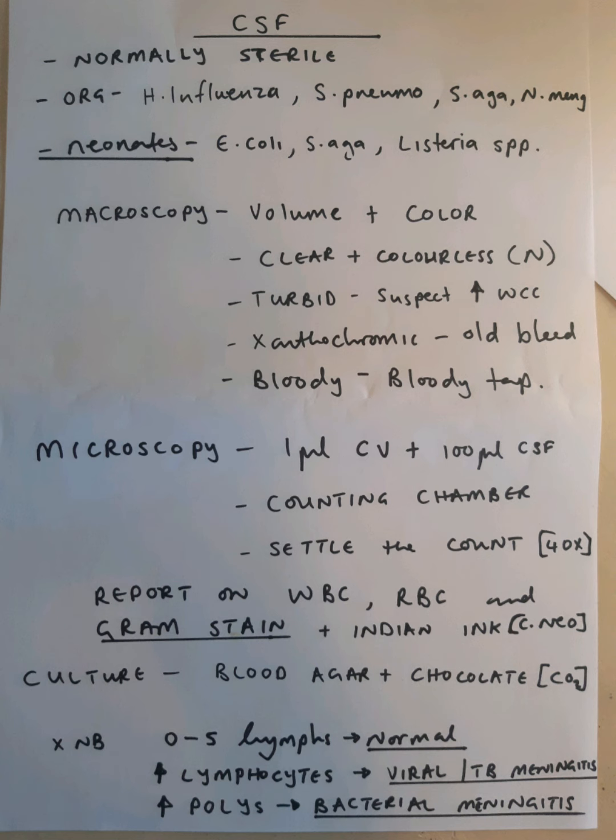We start with macroscopy when doing CSF processing. This involves the volume of the CSF and the color, which is normally clear and colorless. If the CSF is turbid, that can suggest an increased white cell count. If it is xanthochromic, that means an old bleed — perhaps a week old — because as the red blood cells break down and the hemoglobin degrades, it turns a yellowish color. If the CSF is bloody, that suggests a clot in the CSF or a problem with the lumbar puncture procedure.